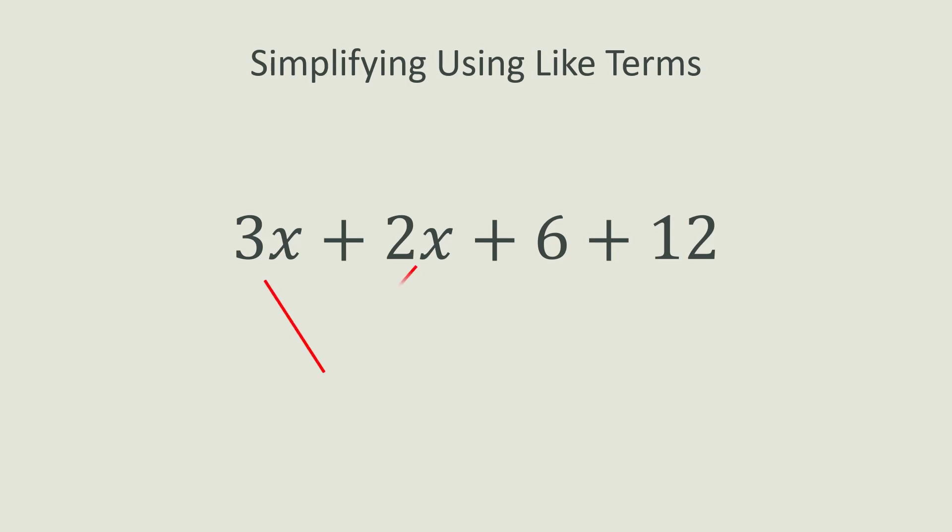The most common way to simplify is to use like terms. Like terms is when two or more values have the same value that they are multiplying by. In this example, we have 3x plus 2x plus 6 plus 12. Since 3x and 2x both have x as a factor, they are like terms. You can add them up and get 5x as a simplified answer.